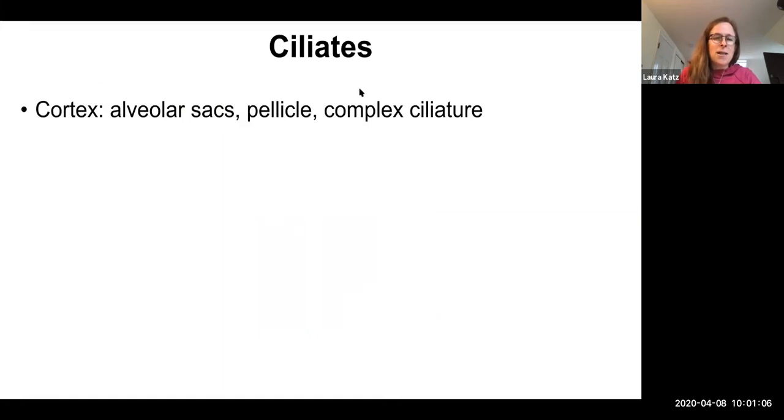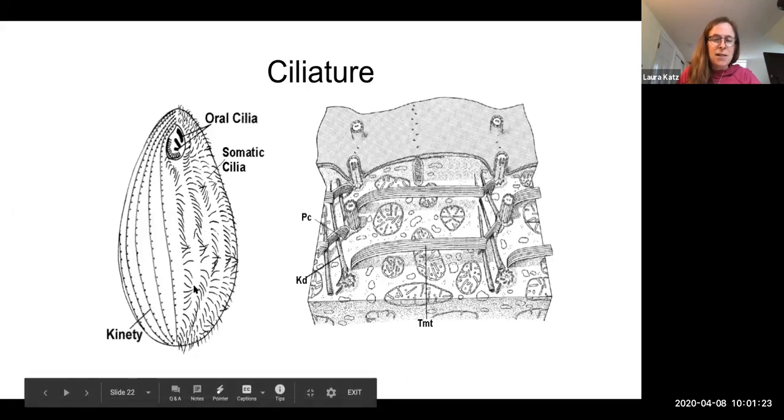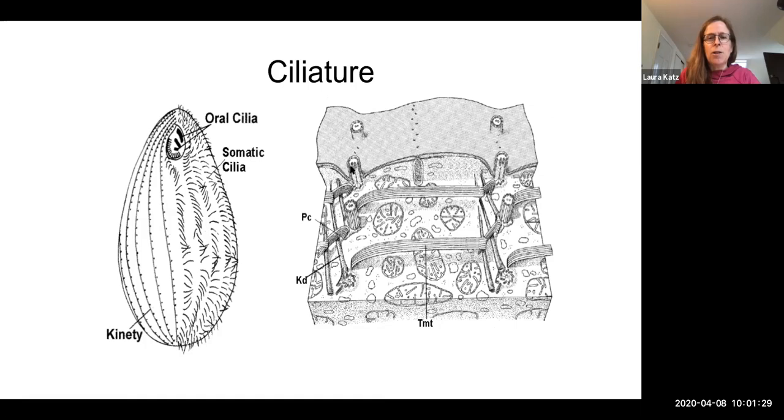Ciliates have a very complex cortex with all sorts of terms. I don't want you to know complex ciliature, but they have these alveolar sacs, which is what places them within the alveolates. In ciliate taxonomy, people spend a lot of time distinguishing oral versus somatic body ciliature. If you do a cross section, what you can see here, some mitochondria. And then here are the eukaryotic flagella with their nine by two plus two. And then ciliates have all of these other complex microtubule structures with names like kinetodesmal fiber. And it's this part of the ciliature that's been used to do ciliate taxonomy for years.